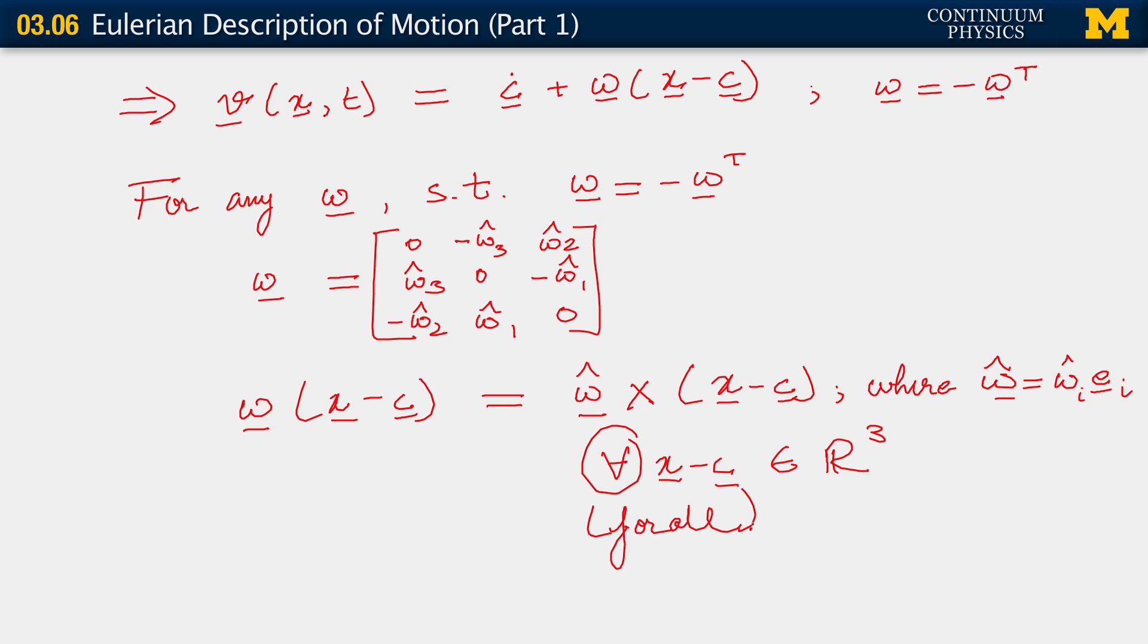So we put all of this together and what do we get? We see that for rigid motion, the Eulerian or the spatial velocity is this quantity c dot, which is just the velocity arising out of the translation, plus omega hat the vector crossed with x minus c.